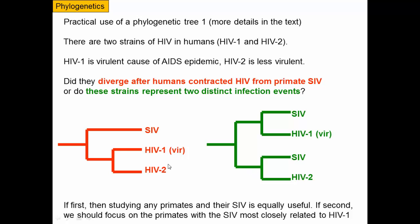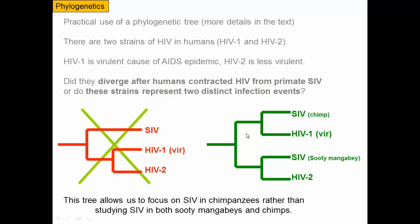This is useful because if it's the first scenario — a single transmission — then it doesn't matter which simian immunodeficiency virus we study in primates. But if there were two separate transmissions, then we are better served studying whichever SIV gave rise to HIV-1, the more dangerous strain, because that SIV would give us more useful information for saving people's lives.